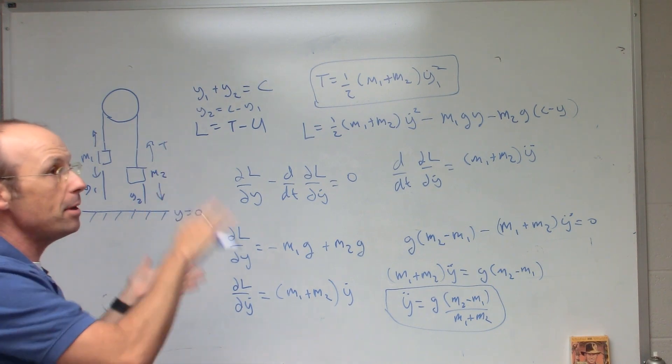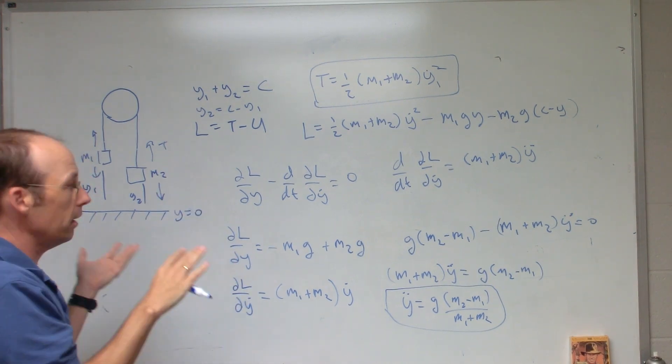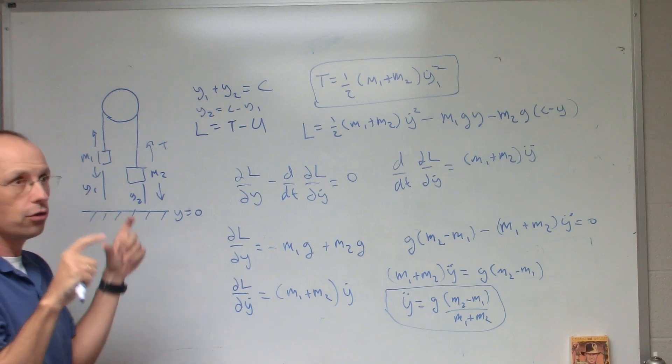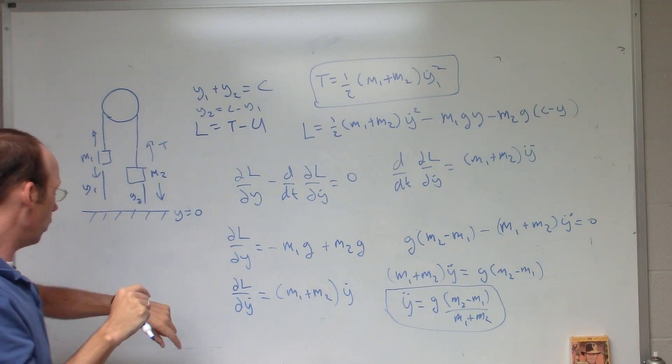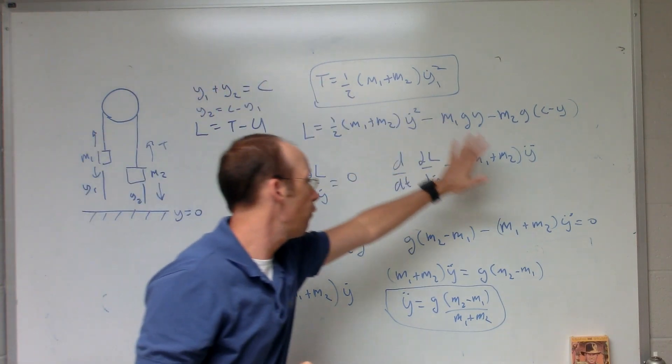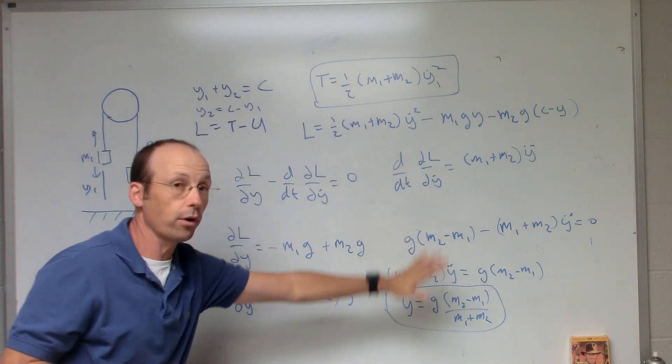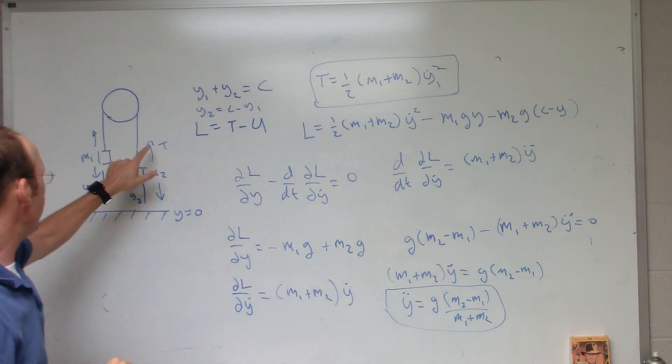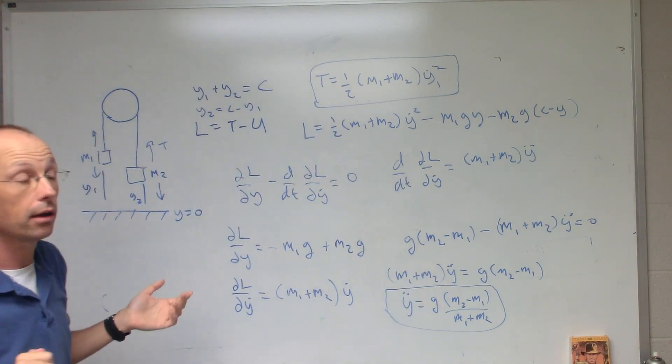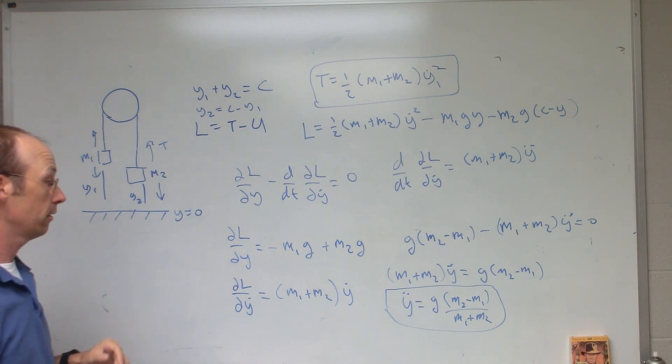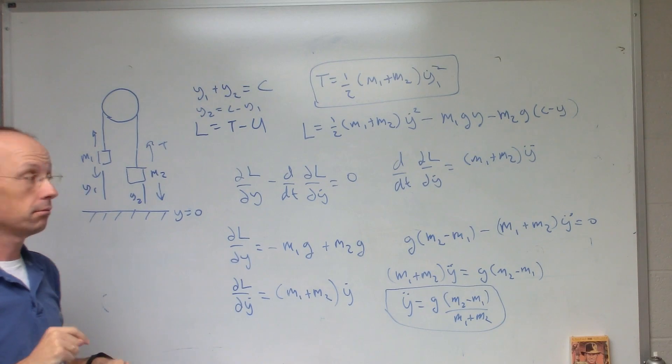And so in this case, maybe this isn't the best way to do it, but it's good to do problems that you can do both ways. Because what's cool here is that there are no forces. I didn't use forces. I don't have to write the tension, which I don't know anyway. I don't care. I don't need it. Just one degree of freedom, so I get one Lagrangian equation. That's it.